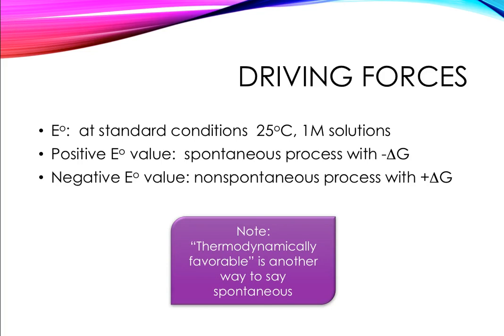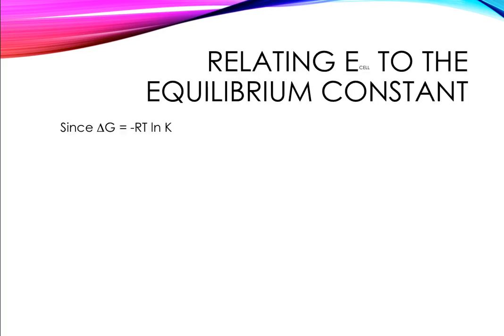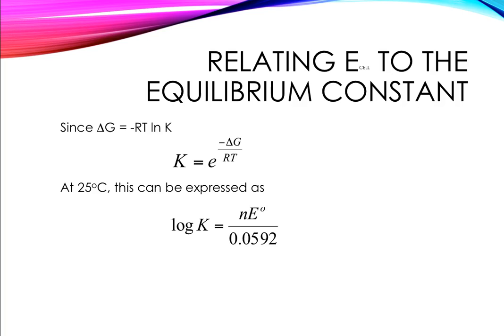And you don't want to be confused just because it's new terminology. We can also relate E cell to the equilibrium constant since delta G equals negative RT ln K. Hopefully you've seen that relationship before, but it's also really helpful. We can rearrange it to solve for K using the exponential function. At 25 degrees Celsius, we can simplify this and say that log K equals N times E naught over 0.0592, because all of the terms simplify when we take R and T. This is a really useful relationship that's going to show up in problems.